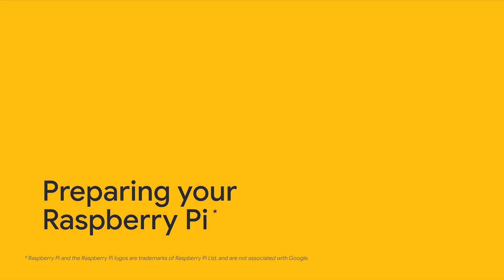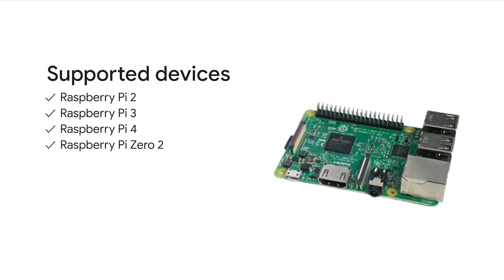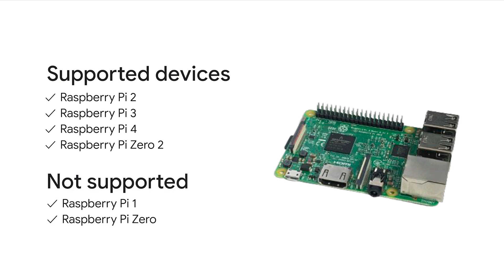Let's get started by preparing your Raspberry Pi. First of all, you need to make sure that your Raspberry Pi can run TensorFlow Lite. You will need either a Raspberry Pi 2, 3, or 4, or a Raspberry Pi Zero 2. The Raspberry Pi 1 and the original Raspberry Pi Zero are not supported because they use a CPU architecture that is not compatible with TensorFlow Lite.